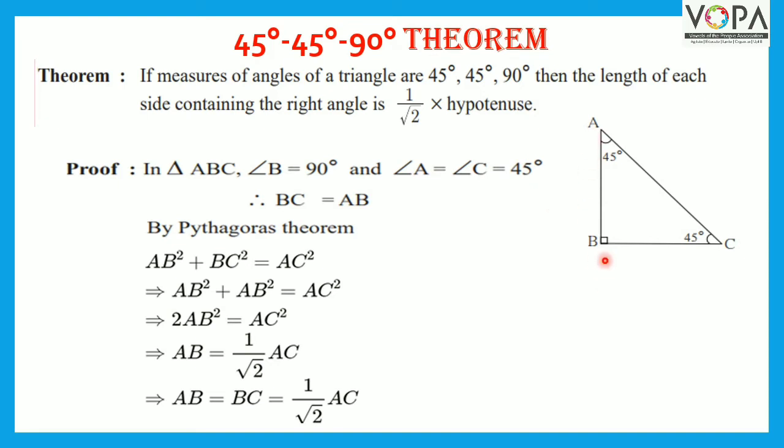Therefore, BC is equal to AB from the isosceles triangle theorem.